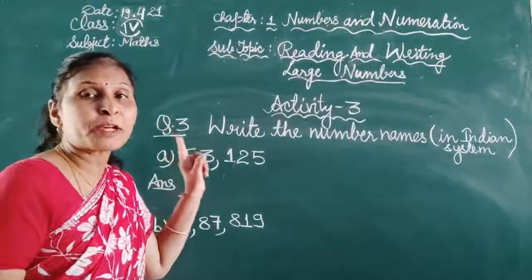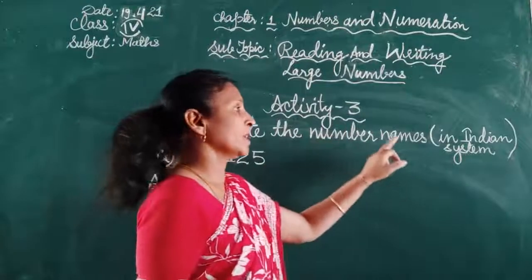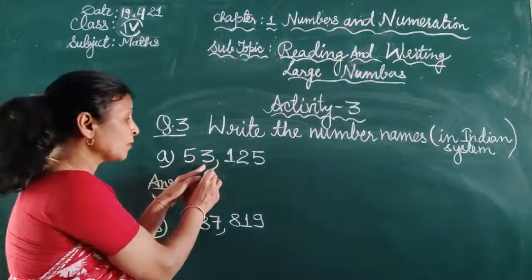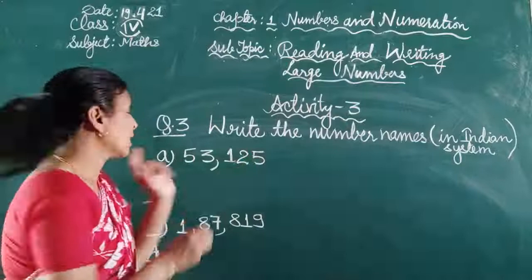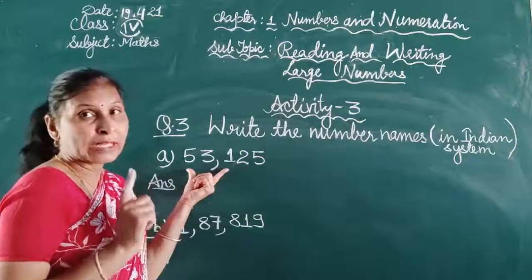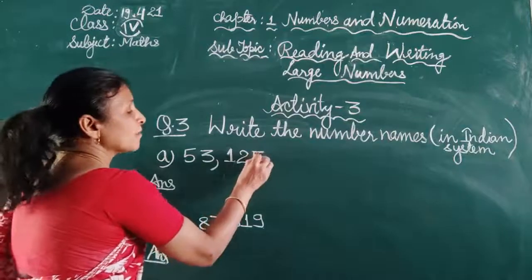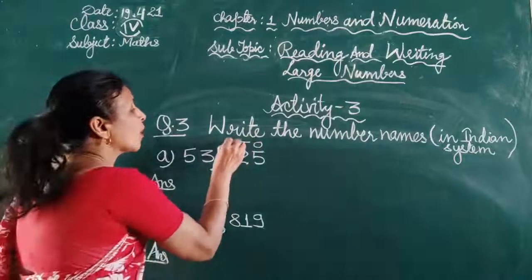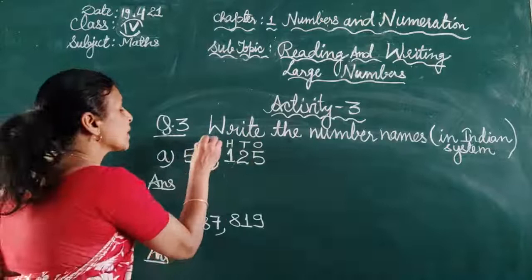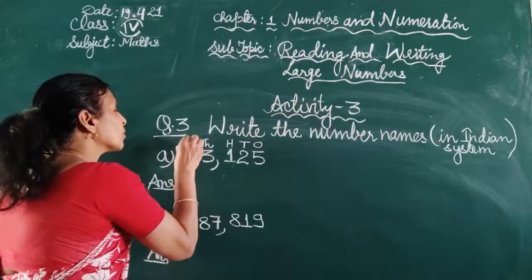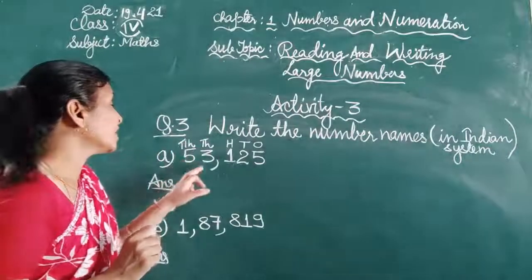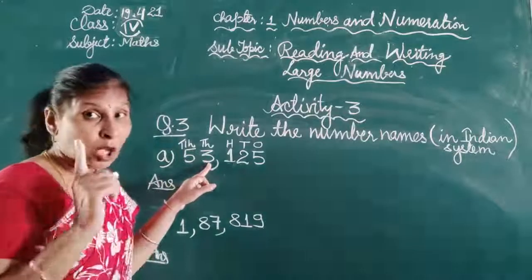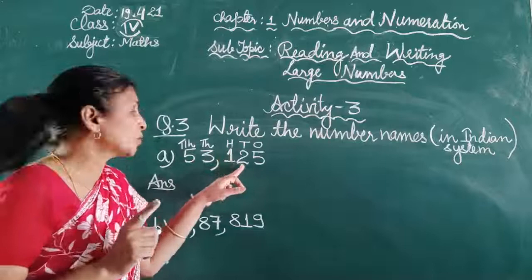Now question number three: write the number names in the Indian system. The given number is 53125. First, we write the places: 5 is in the ones place, 2 in tens, 1 in hundreds, 3 in thousands, and 5 in ten thousands. We read the two digits in the thousands period together: fifty-three thousand. Then the ones period: one hundred twenty-five. So the number name is fifty-three thousand one hundred twenty-five.